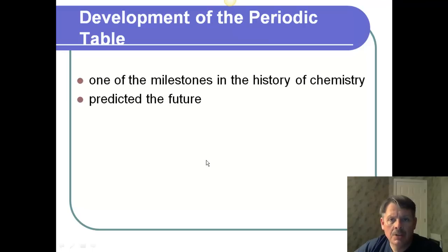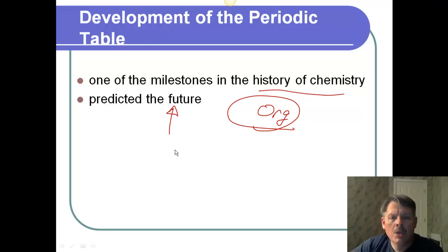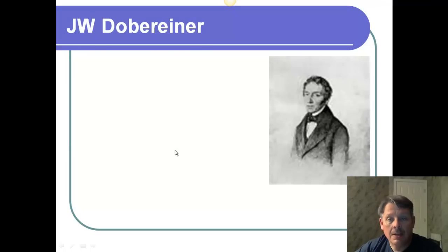The development of the periodic table truly was one of the milestones in the history of chemistry. Not only because it organized everything, and that is exactly what the periodic table did, is it organized everything. But just as important, in fact, more importantly, it predicted the future. Think about why you watch the Weather Channel. It's not because you want to see whether it rained or not yesterday. You already know that. What you're trying to do is figure out what it's going to do today, or tomorrow, or over the weekend. So, as you look at predicting the future, that's the concept of part of what the periodic table did for us back in the 1800s.